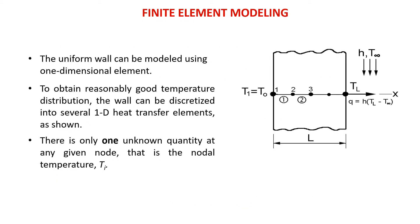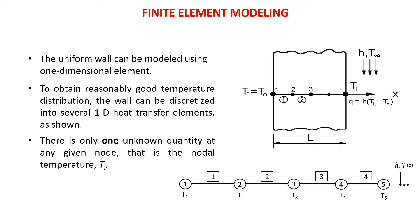In order to solve a steady state heat conduction problem using finite element modeling, the wall can be modeled using a 1D element. To obtain a reasonably good temperature distribution, the wall can be discretized into several 1D heat transfer elements, as shown in this figure, where this wall has been discretized into four elements.